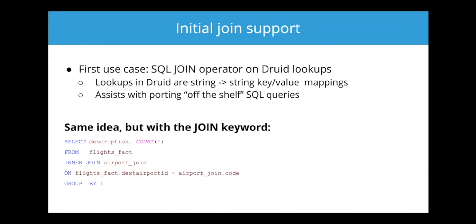It can do what a real join operator does: depending on how many rows match on each side of the join condition, you may get one row, multiple rows, or zero rows out the other end. So you can use these joins as filters — the way an inner join acts as a filter — or you can even expand the dataset and return multiple rows for any one input row, just as you'd expect from a join operator.